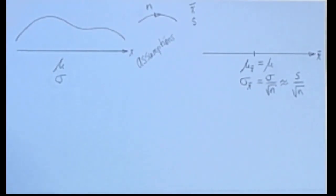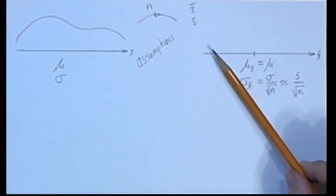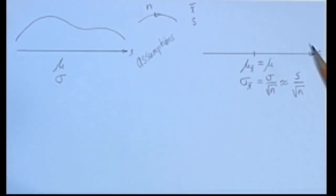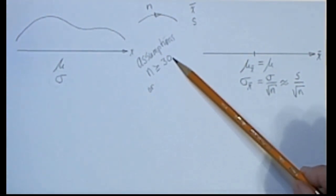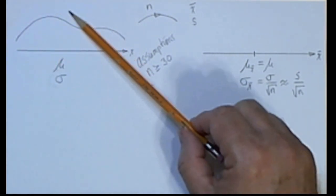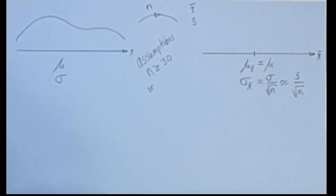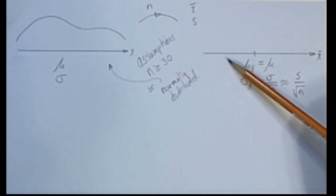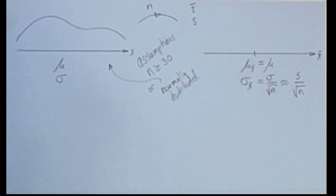Now, if certain assumptions are met, we can almost be guaranteed that this distribution of sample statistics, of those sample means, is going to be normally distributed. That is, if N is sufficiently large, say bigger than 30, or if this original population was normally distributed. If either of those conditions are satisfied, then we're almost guaranteed that this is going to be normally distributed.